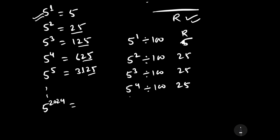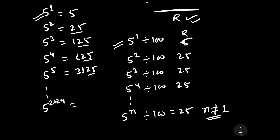Then we can say that whatever is the power of 5, when we divide it by 100, it will give remainder 25, provided n should not be equal to 1. When n is equal to 1, then the remainder will be equal to 5.